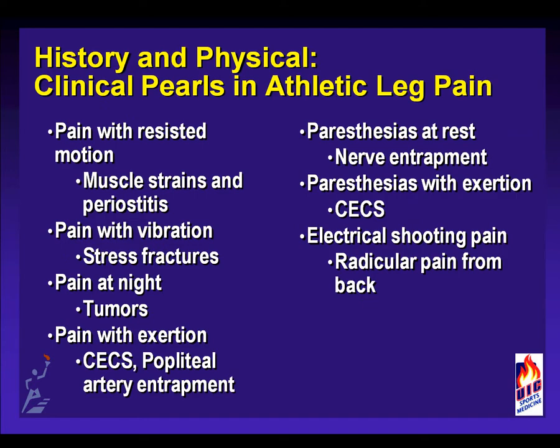Pain with resistant motion is consistent with injury to the muscle tendon unit, muscle strains, or potentially the muscle insertion onto the bone and periostitis. Vibrational activities appear to exacerbate the pain of stress fractures; therefore, treatment with ultrasound or placing a tuning fork along the subcutaneous border of the tibia will significantly exacerbate pain in a very focal area. Pain at night is concerning for the potential of tumors, and pain with exertion is fairly classic for chronic exertional compartment syndrome or popliteal artery entrapment syndrome. Numbness or paresthesias at rest are consistent with nerve entrapment or proximal radiculopathy.